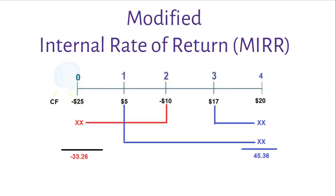MIRR is the discount rate at which the present value of a project's cost is equal to the present value of its terminal value. Terminal value is defined as the sum of future values of all cash flows.